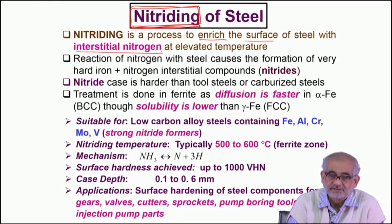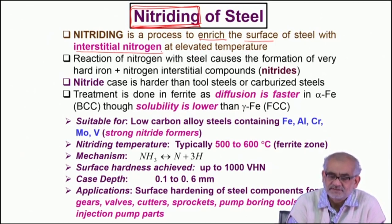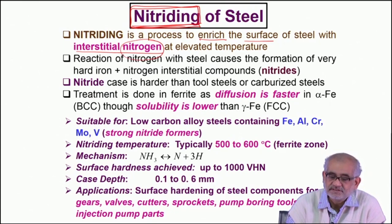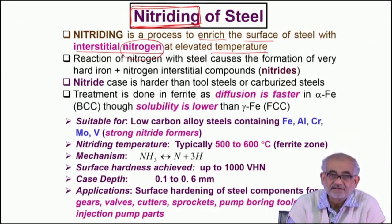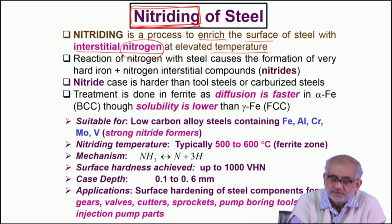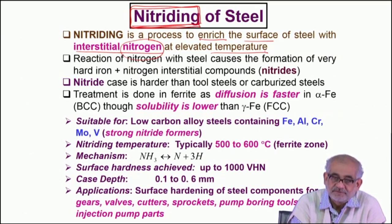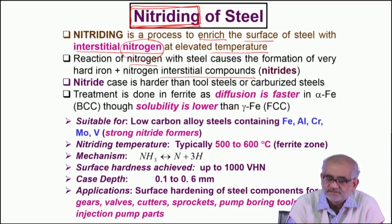Hydrogen, carbon, nitrogen, and oxygen are the elements which can easily be accommodated in the interstices. This technique is all about introducing nitrogen in the interstices of steel at the surface up to a certain depth. This is a diffusion-controlled, thermally activated process, so it is usually conducted at elevated temperature. When we actually introduce nitrogen, it chemically reacts and forms a series of intermetallic compounds called nitrides.